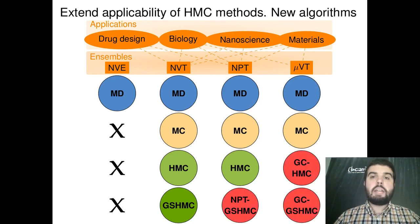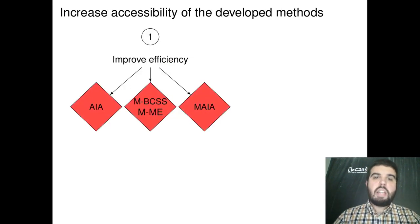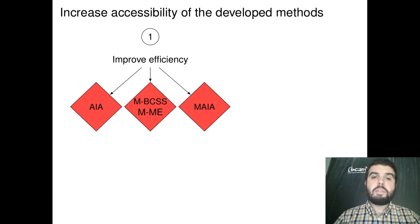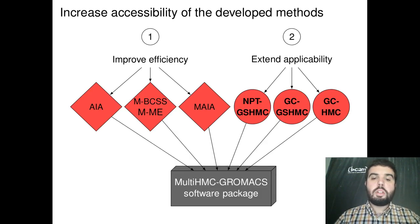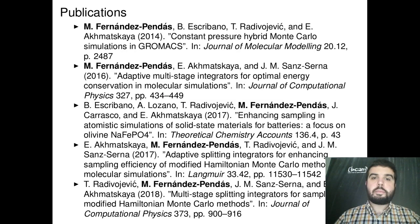We have derived and implemented the new techniques for these ensembles. We also increased the accessibility of all of them — the improvement of efficiency and the extension of applicability — meaning that we have implemented all these methods in an in-house code that we call multi-HMC GROMACS, which is an extension of the well-known GROMACS package. All the results have been published in five papers in scientific journals.